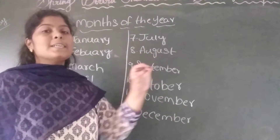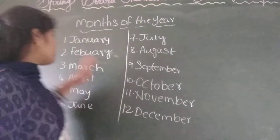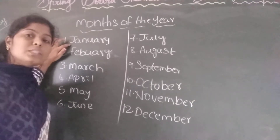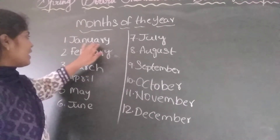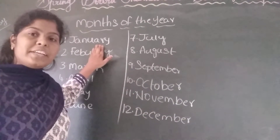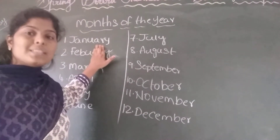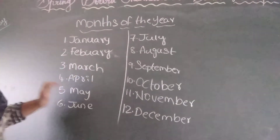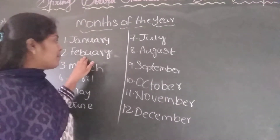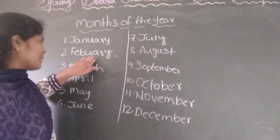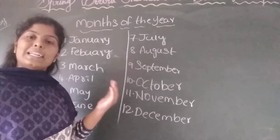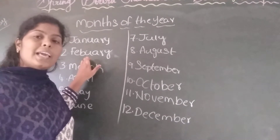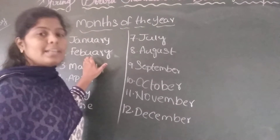Now let us see what is the speciality of each month. January is the starting month of the year. In January we all celebrate New Year. January is the first month of the year. The second month is February. In February we have fewer days — except February, in all 11 months we have 30 or 31 days, but in February we have 28 days in normal years and 29 days in leap years.